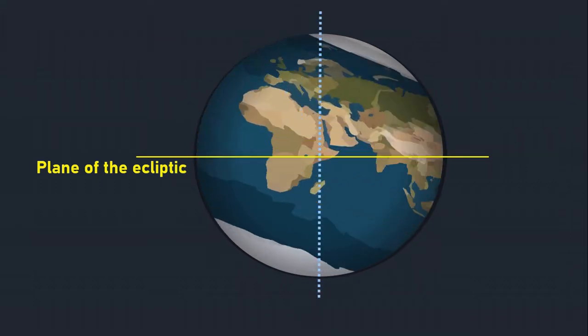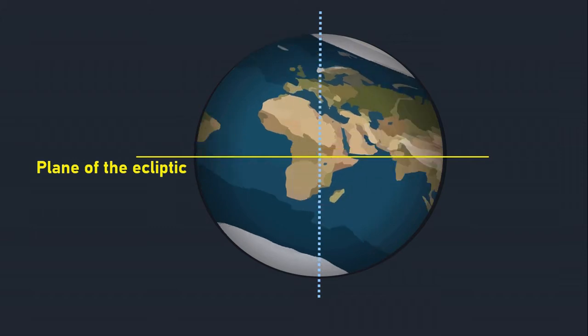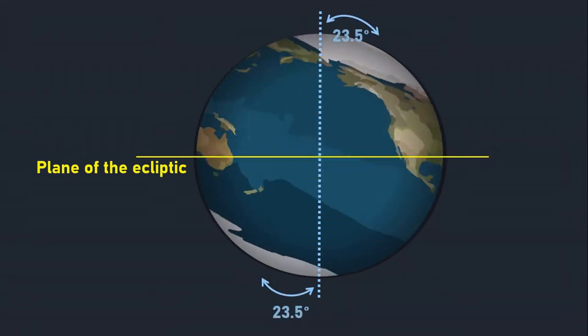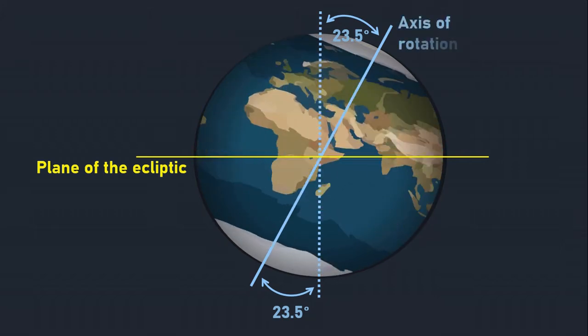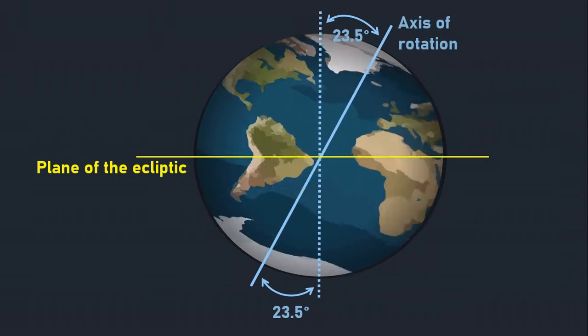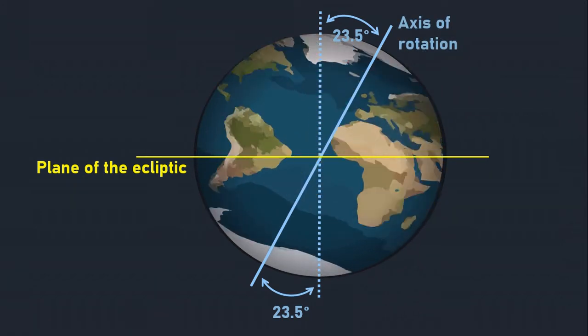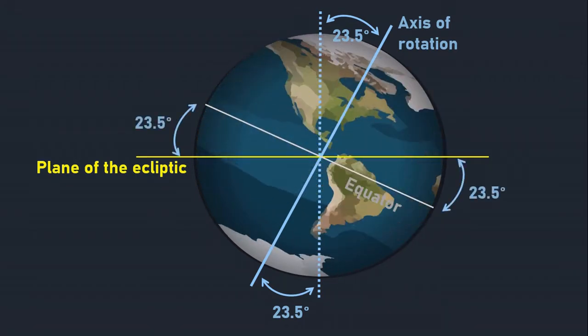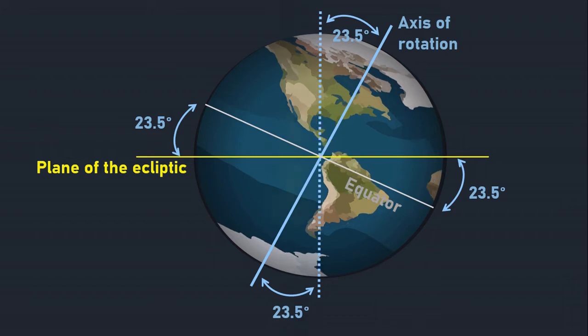Now if a perpendicular line is drawn through Earth and the plane of the ecliptic, the axis of rotation lies 23.5 degrees from the perpendicular line and the plane of the ecliptic. Likewise, the equator is also tilted 23.5 degrees from the plane of the ecliptic.